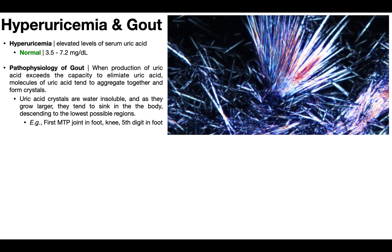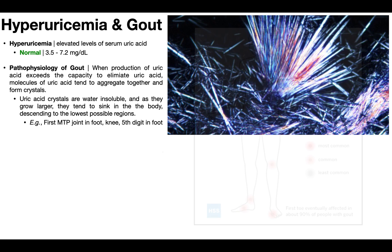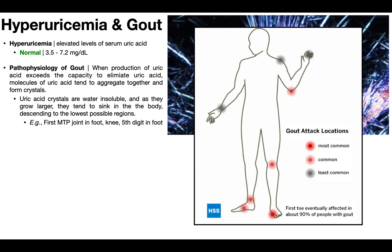Because these crystals are water insoluble and grow larger, they tend to sink in the body due to gravity, descending to the lowest possible regions. The most common place to find gout — where these crystals eventually nest — is in the big toe, around the first MTP joint. The first toe is affected in about 90% of people with gout. You can also find it in the ankle, on the fifth digit side of the foot, in the knee, and in the elbow. It's much less common in the fingers, wrist, and shoulder.